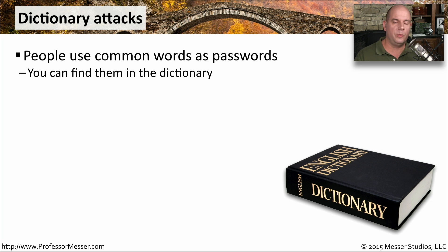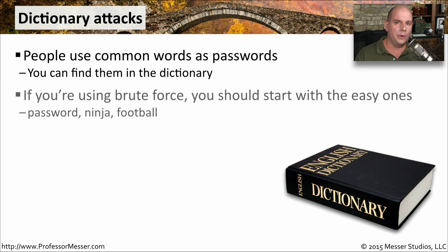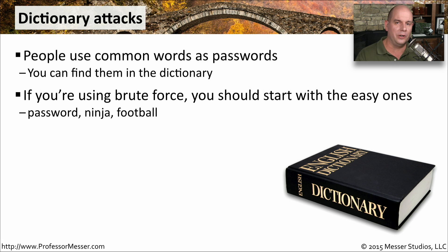One way of performing a brute force attack is to try every possible combination of letters, numbers, and special characters, which can obviously take a very long time. So instead, the bad guys narrow down the scope and only try words that are well-known — perhaps those found in a dictionary. That's why we have the dictionary attack: stepping through words very commonly used as passwords, like 'password,' 'ninja,' and 'football.' Studies have shown these are very common passwords, so why not try the low-hanging fruit first and identify a username and password combination very quickly.